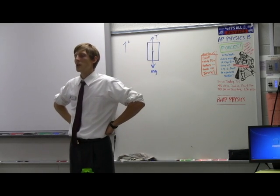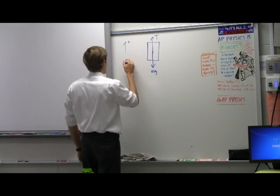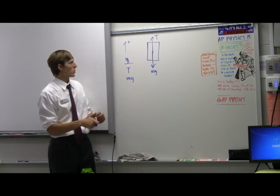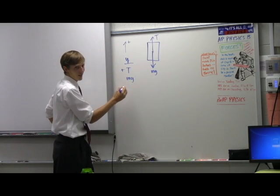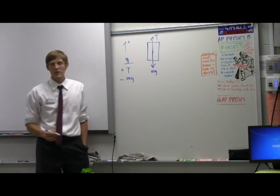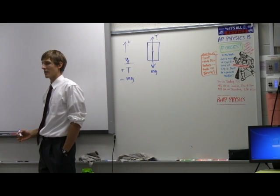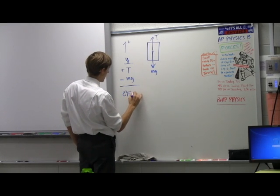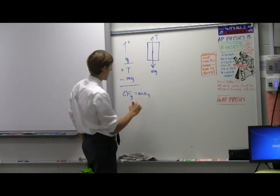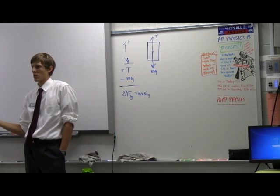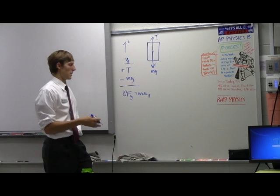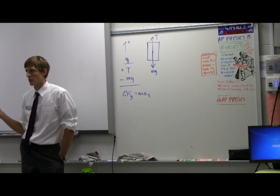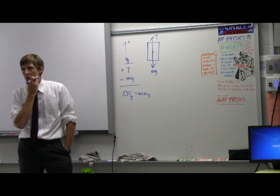Let's make a Y column and list our forces with signs. T is positive and mg is negative. Next step: write sigma F in Y equals ma in Y. Now, is there a part of this step we left off? Equilibrium! Are we at equilibrium? The problem says it's accelerating upward, so no — it's not at equilibrium.